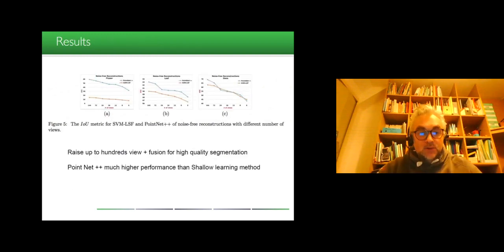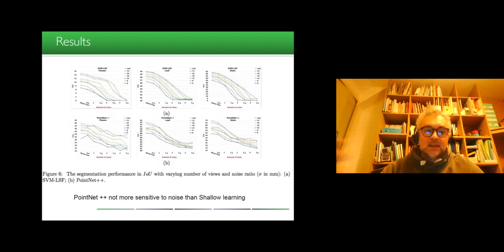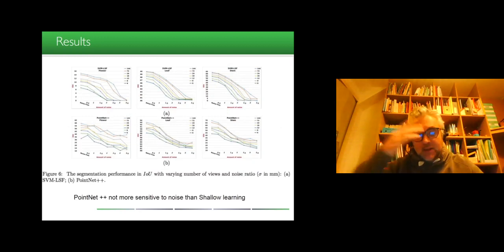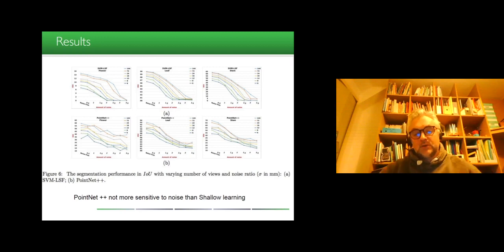And we studied the impact of the noise, of this noise, density of point cloud and noise on the sensor, on the performance of an uncrafted algorithm and the PointNet++ algorithm. The PointNet++, not surprisingly, give much higher performance than the shallow learning method, but more interestingly, PointNet++ appear not to be more sensitive to noise than shallow learning. So which means that, which is kind of counterintuitive because it's often said that deep learning architecture are sensitive to noise, and it happened here that it's not more sensitive than classical uncrafted shallow learning.